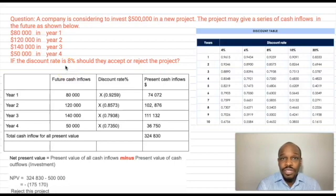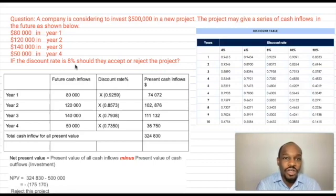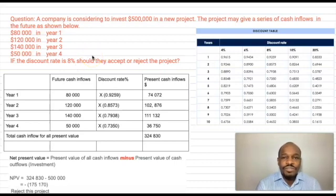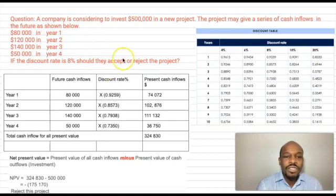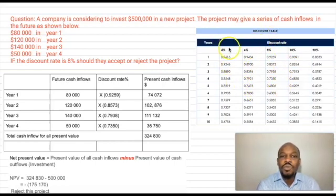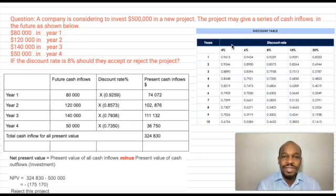They have given us the discount rate of 8%. Pay attention to the discount rate: when we use the discount rate, we have a future amount and we want to know its present value. When we use an interest rate, we have a present amount and want to know the future amount. In terms of formulas, K represents the discount rate and R represents the interest rate. But for the IB program, they have given us a discount table, which we're going to use — making it far easier than using the formula.